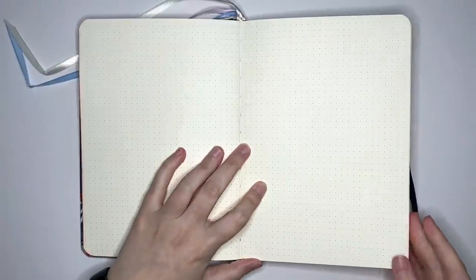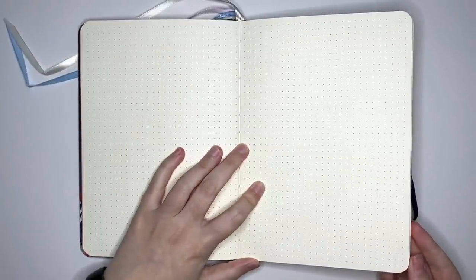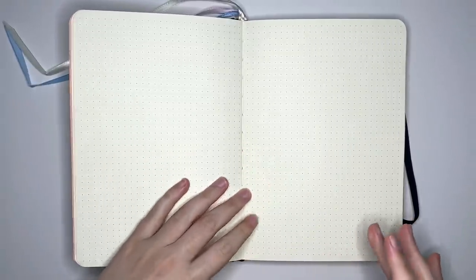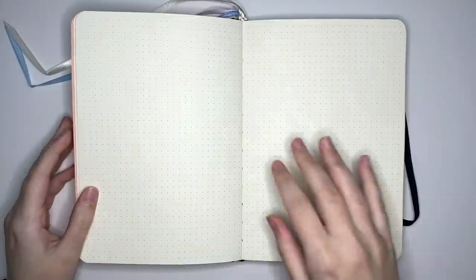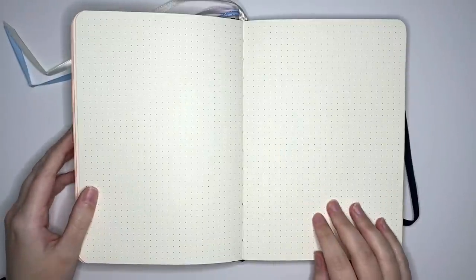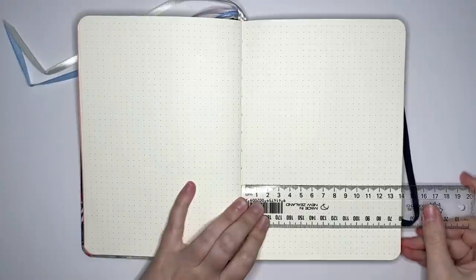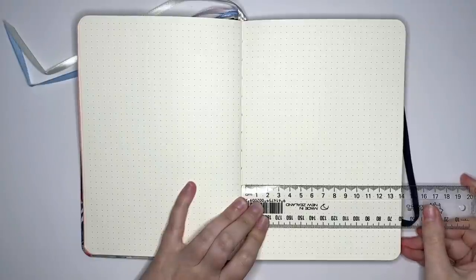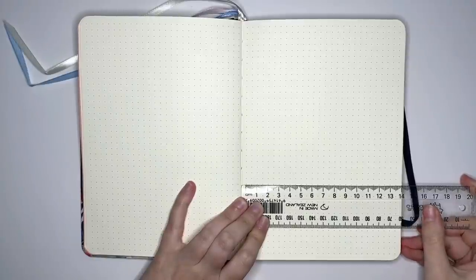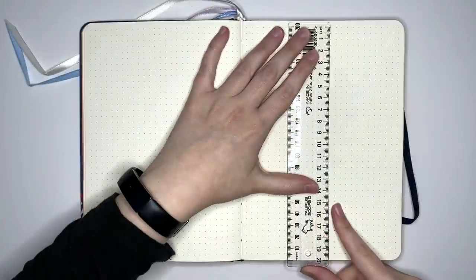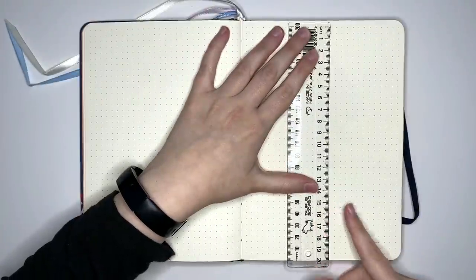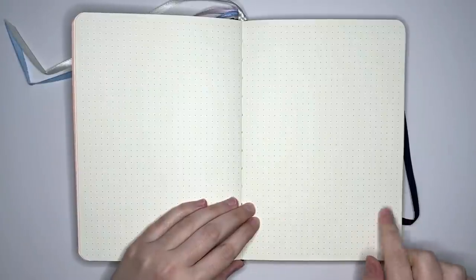As you can see, our pages are not numbered. The darkness of the dots is pretty good, like there's a pretty good contrast between the paper itself and the dots. Having a look at the dimensions of our page though, across the page we have 13 and a half centimeters, so 27 spaces across, and vertically we have 19 and a half spaces, so 39 spaces down. So one space extra, both vertically and horizontally, compared to the Archer and Olive.